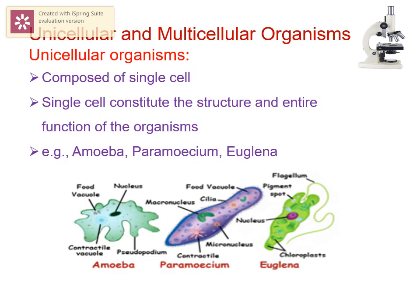Some organisms are made up of only one cell; they are called unicellular organisms. In unicellular organisms, all the functions of the organism — digestion, respiration, excretion, etc. — are performed by that single cell only. For example, amoeba, paramecium, and euglena.